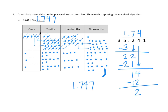We can't divide two hundredths into three groups, so we start thinking of them as thousandths. We already had one thousandth, so now we can think of this as twenty-one thousandths. Twenty-one thousandths divided into three groups gives us seven in each group. Seven times three is twenty-one, and that uses up all of our thousandths. So the standard algorithm confirms our answer of 1.747, showing it's the exact same process as the place value chart.